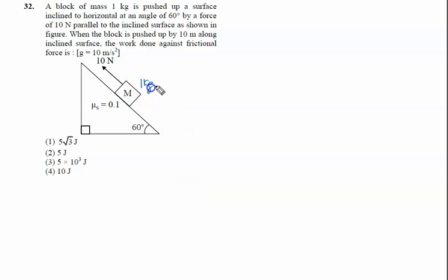A block of mass 1 kg is pulled up a surface inclined at 60 degrees to horizontal by a force of 10 N parallel to the inclined surface as shown in the figure. When the block is pushed up 10 m along the inclined surface, we need to find the work done against friction force.